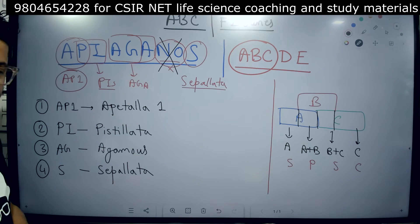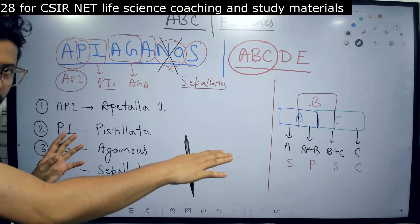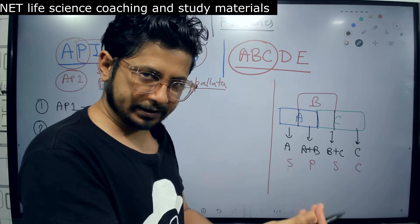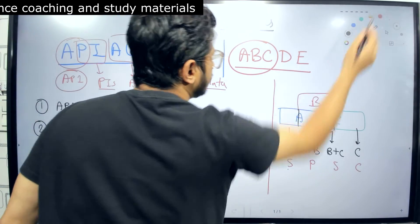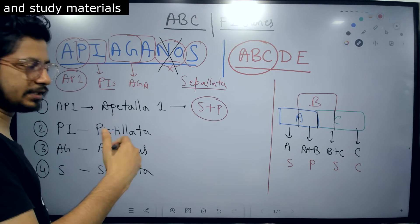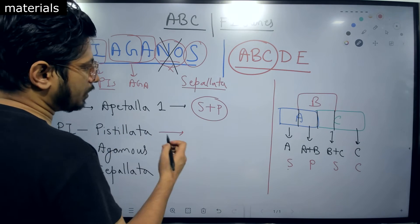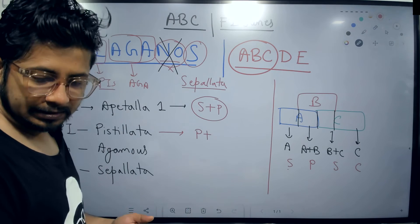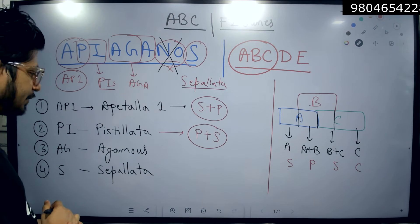We have these four different genes. Now the question is assigning the function of these genes to which particular whorl of the flower. We have four whorls: sepal, petal, stamen, carpel. This is how it's done. Apetala 1 is responsible for the whorl sepal and petal. The Pistillata is responsible for petal and stamen.